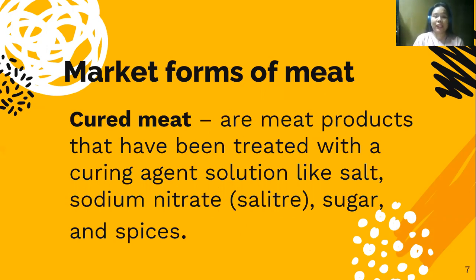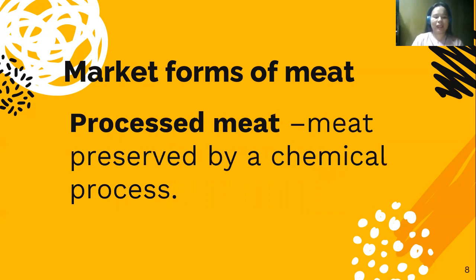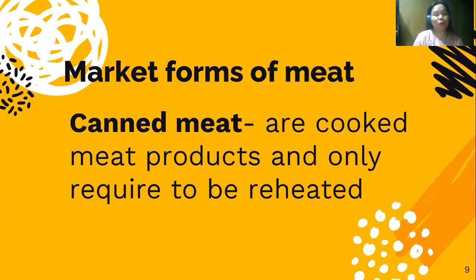One popular example of cured meat is our all-time favorite tocino. The next market form is called processed meat — meat preserved by a chemical process, modified to either improve its taste or extend its shelf life. Examples include bacon, ham, sausages, salami, corned beef, and hot dogs. Next is canned meat: cooked meat products that only require reheating, and like processed meat, undergo a chemical process to prolong shelf life.